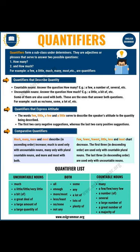Quantifiers that express attitude: the words 'few' and 'little,' and the phrases 'a few' and 'a little,' describe the speaker's attitude toward the quantity being described. The first two carry negative suggestions, whereas the last two carry positive suggestions. For example, 'I have little time' means the speaker hardly has time, whereas 'I have a little time' means that while the speaker may not have all the time in the world, they have enough for the purpose at hand.